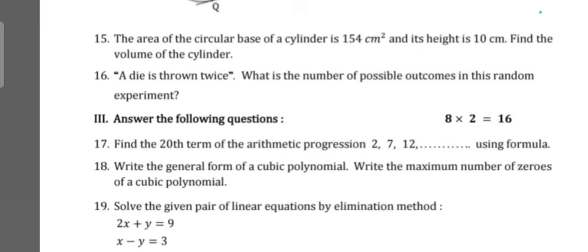Question 15: The area of a circular base of a cylinder is 154 square centimeters and its height is 10 centimeters. Find the volume of the cylinder. Question 16: A dice is thrown twice. What is the number of possible outcomes in this random experiment?